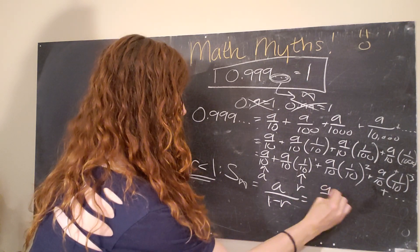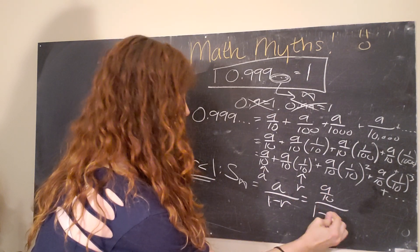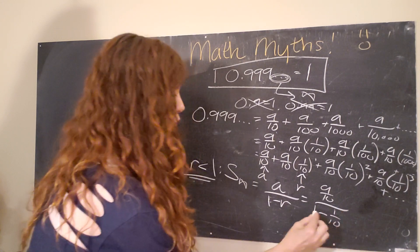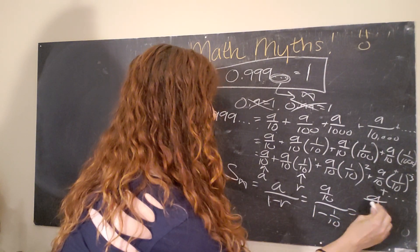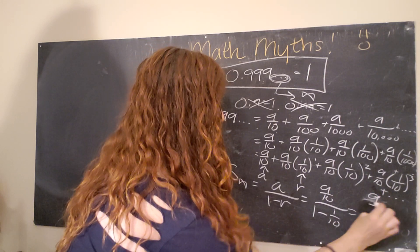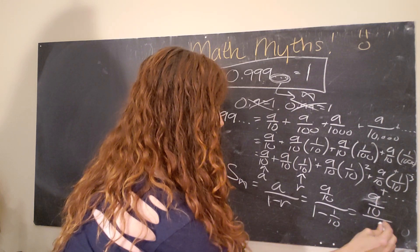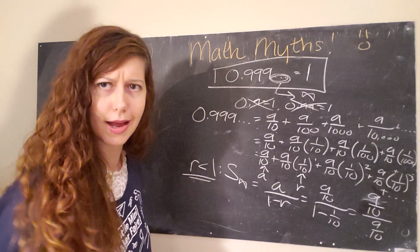So in that case, we get 9 over 10 divided by 1 minus 1 over 10. 1 minus 1 over 10 is just 9 over 10. So we get 9 over 10 divided by 9 over 10. Look at that. Okay.